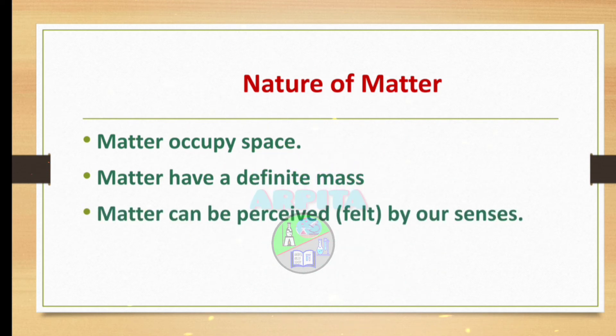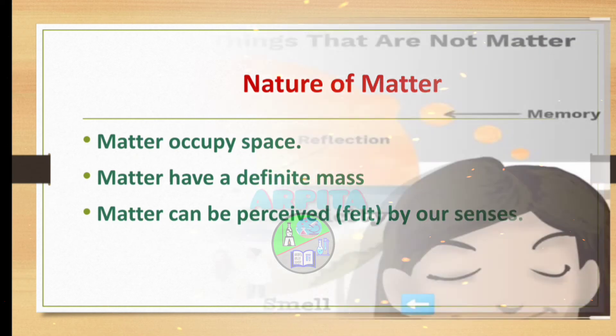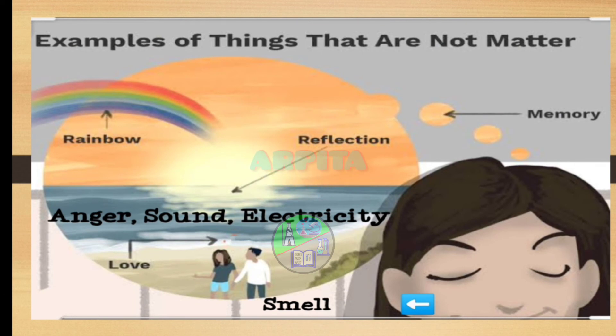And the third nature is matter can be perceived or felt by our senses. But there are few things in the nature which are not considered as matter as neither they occupy space nor have mass. For example: rainbow, reflection, memory, anger, sound, electricity, love, smell.